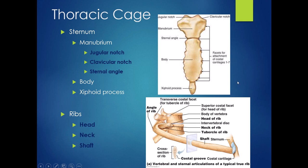Looking at the thoracic cage, on the sternum we've got the manubrium, the sternal body, and the xiphoid process. On the manubrium, we've got the jugular notch at the top for the jugular veins, and two clavicular notches on either side where the clavicles attach to the sternum. On the body of the sternum, we've got facets for the costal cartilages. The xiphoid process is mostly cartilaginous tissue until we're in our 50s, and then it will finally ossify.